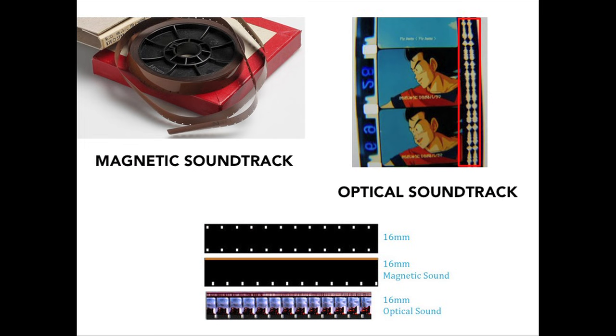Soundtracks you might see with film include magnetic soundtracks or optical soundtracks. An optical soundtrack has the sound waves printed directly on the film, read by an optical reader. A magnetic soundtrack is a magnetic stripe printed onto or alongside the film. A 16mm film might have no soundtrack, a magnetic stripe, or an optical soundtrack — you can see the two channels of sound waves printed along the side. It's especially important to know about magnetic soundtracks because they're susceptible to the same problems as magnetic media.